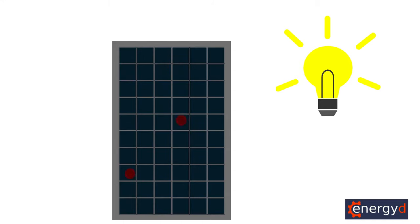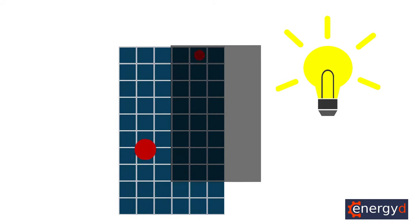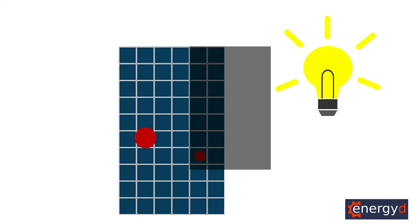But what if only some of the cells get shaded? The problem here is that a few shaded cells can act as a bottleneck, reducing the power output of all the other cells too. So does this mean that shade on one of your solar panels will spoil your solar production across the board?